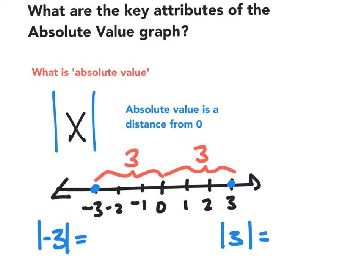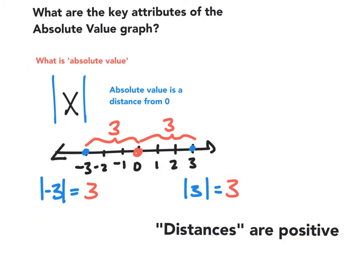Each of these numbers, both negative and positive three, are three units away from zero. So the absolute value of each of these numbers is positive three. And because absolute value is a distance, distances are positive. That's why this absolute value of negative three became positive three.